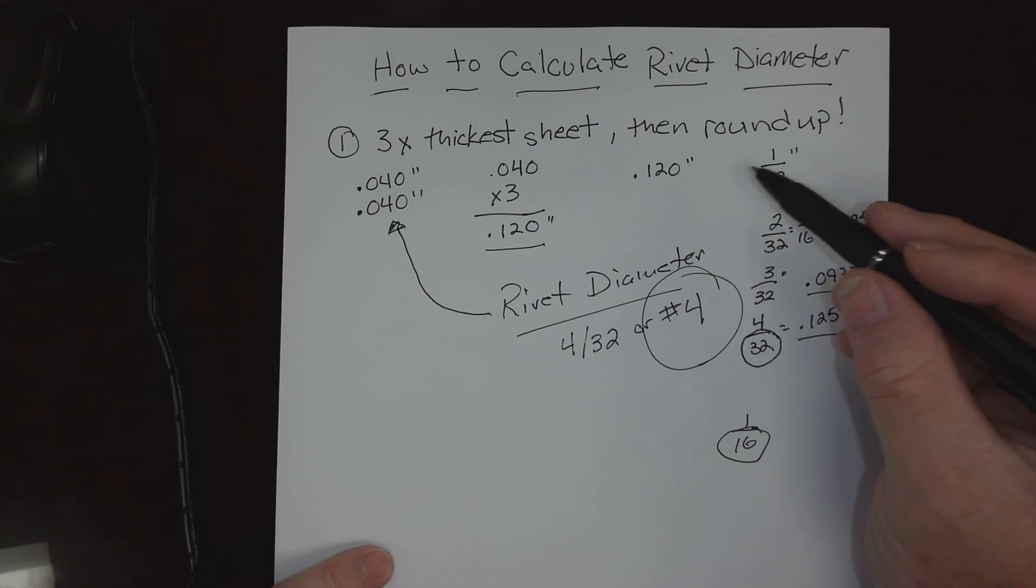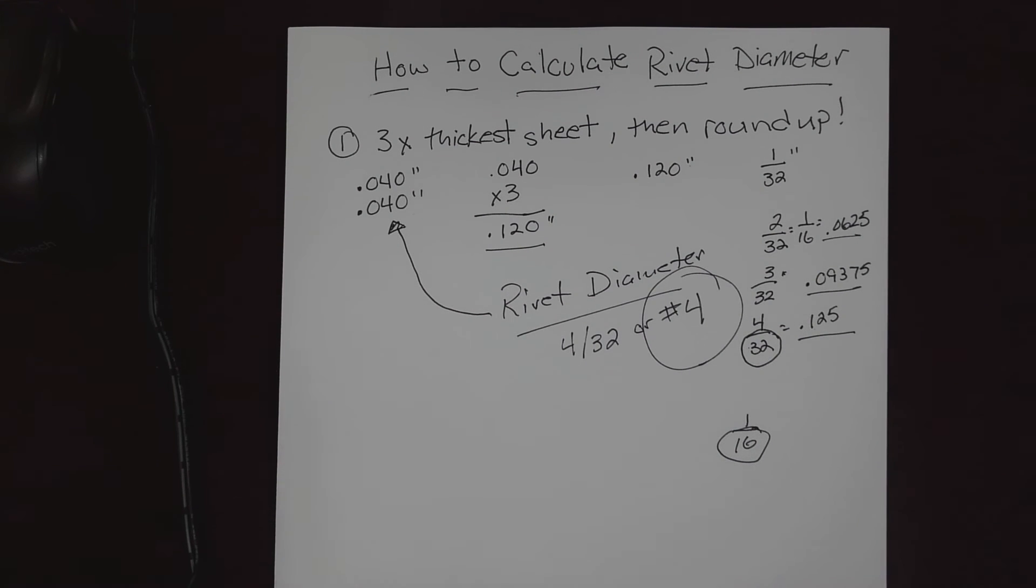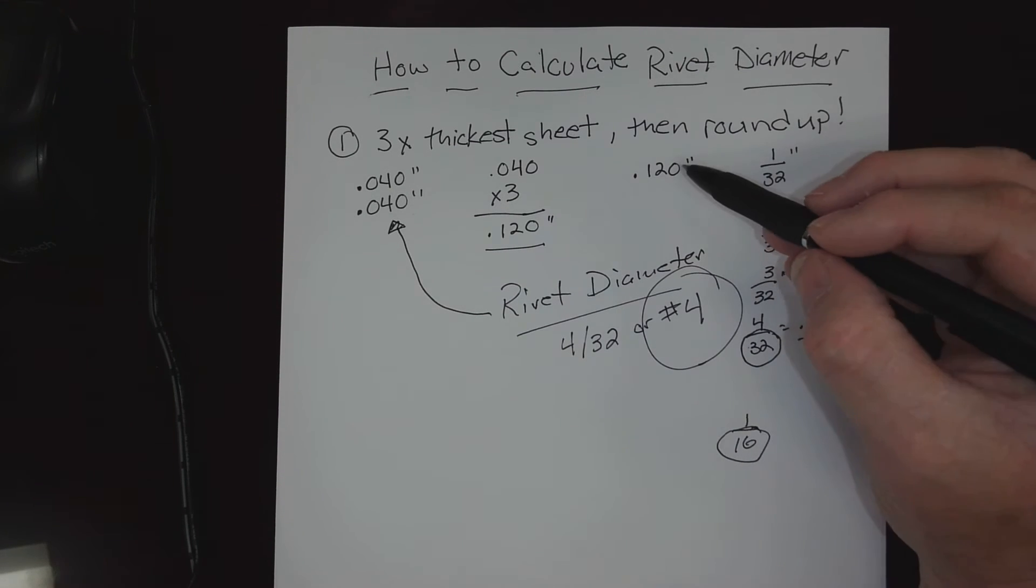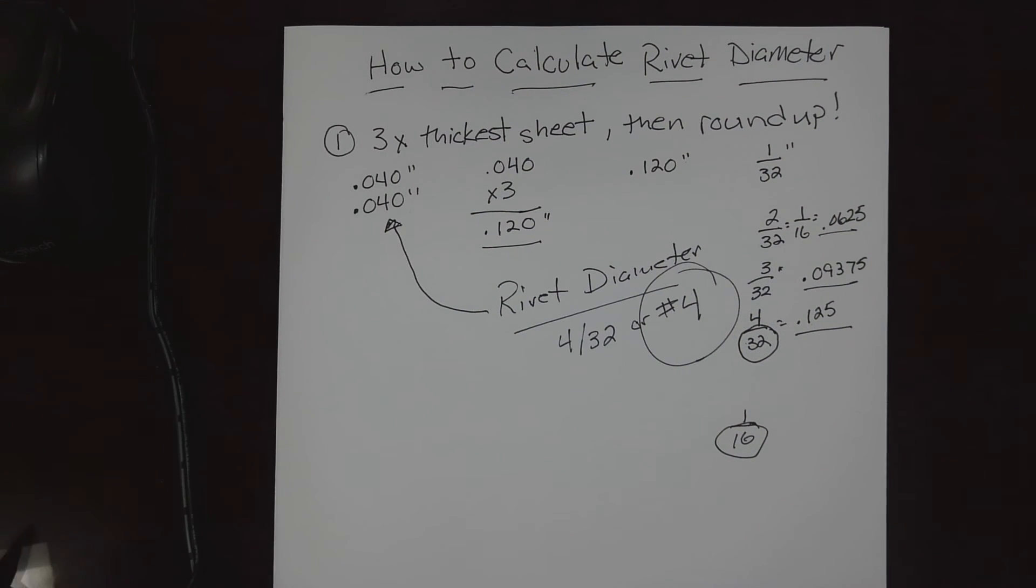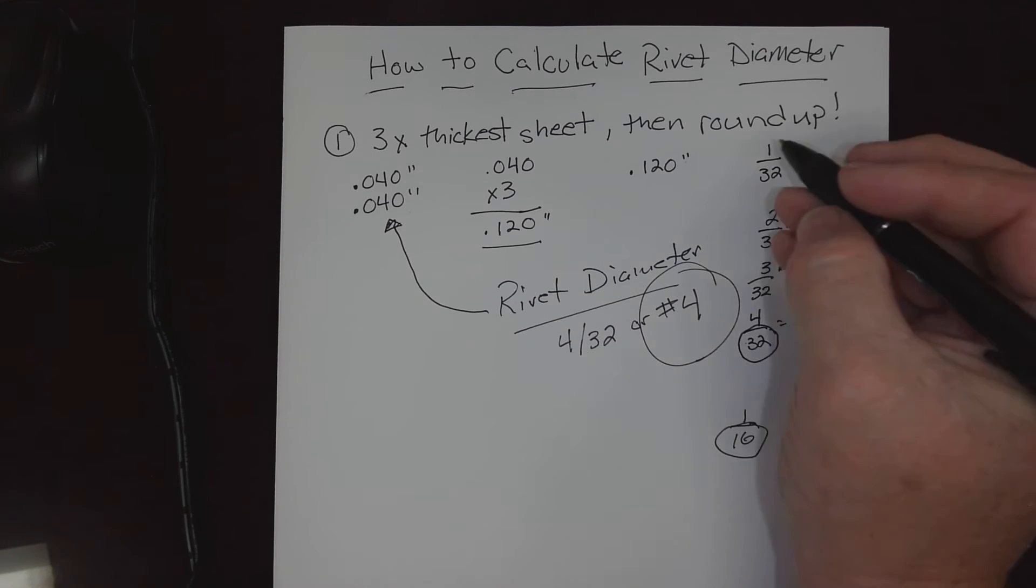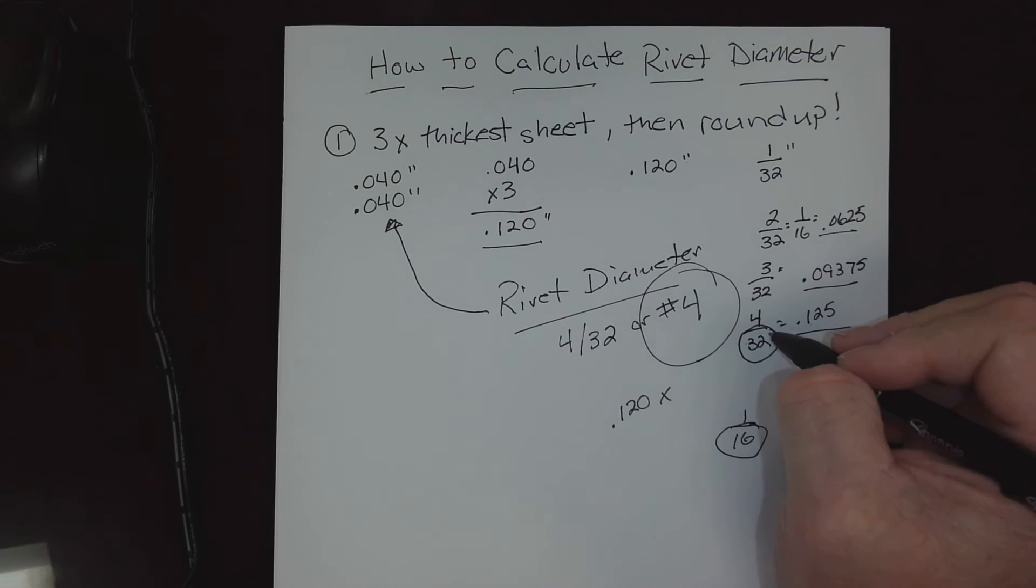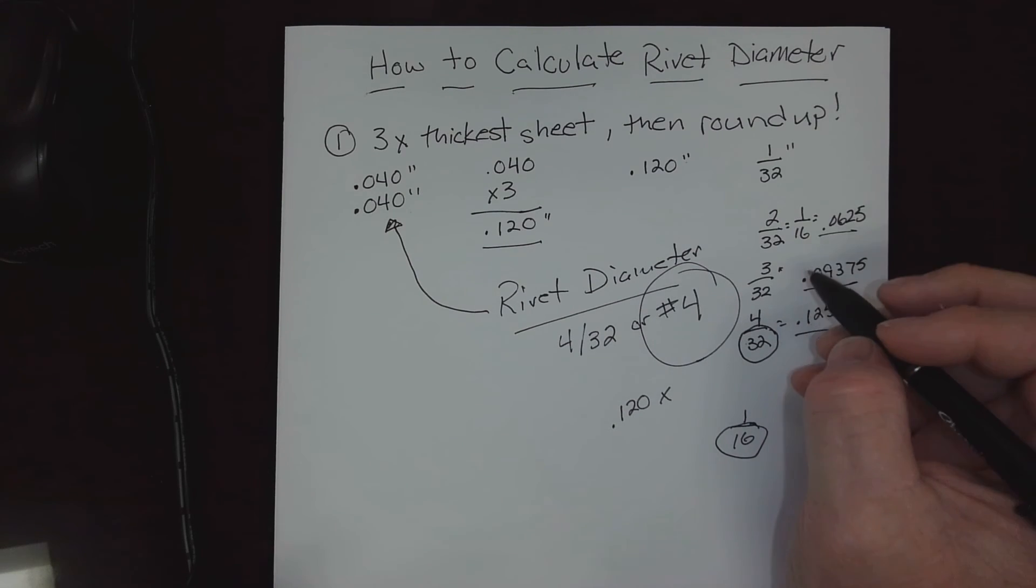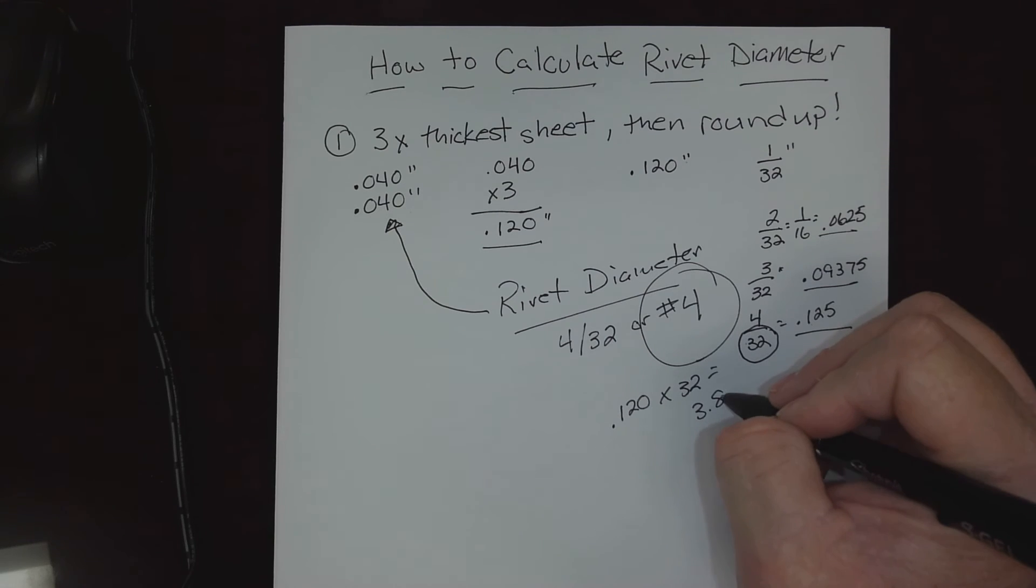And that is, remember: all diameters are thirty-seconds, all lengths are in one-sixteenths. Keep that in mind. A lot of times you can multiply your desired result by whatever you're seeking. So in this case, we would take 0.120 times thirty-two. And guess what we'd end up with? 0.120 times thirty-two, our constant increment - and guess what that equals? 3.84. Then if we rounded that up, we would have landed perfectly on that number four.